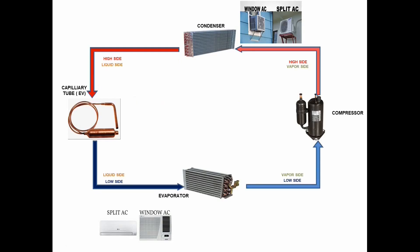By that, we've determined the condition of the refrigerant at different sides of our cycle. So let's start now how it actually works. Upon working of our compressor, it will draw in or suction the low pressure, low temperature, warm vapor refrigerant from the evaporator. Then it will convert it into high pressure, high temperature, high vapor refrigerant, which it will then supply to the condenser.